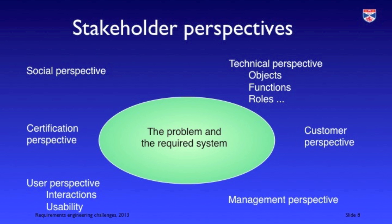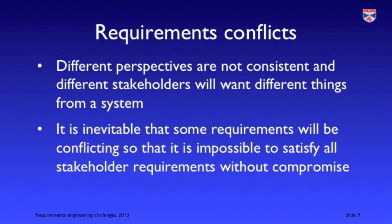And finally there's a social perspective, which is particularly important for critical systems — where society is affected by the operation of these systems and often through politicians their views will influence the requirements for a system. These different perspectives are not consistent. They'll all come up with different requirements and they'll often be conflicting, asking for different things from the system. So the requirements have to be a compromise, trying to keep as many stakeholders satisfied as possible.